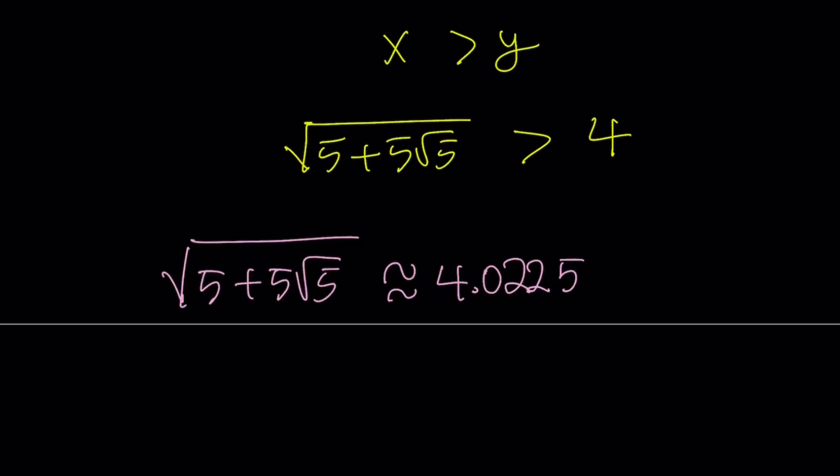So, here's the numerical value of the square root of 5 plus 5 root 5. It's about 4.0225. And as you can see here, it's slightly larger than 4. And this brings us to the end of this video.